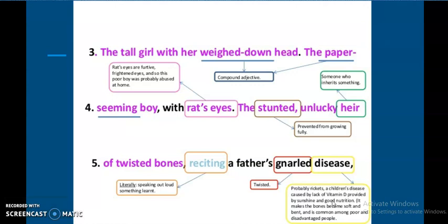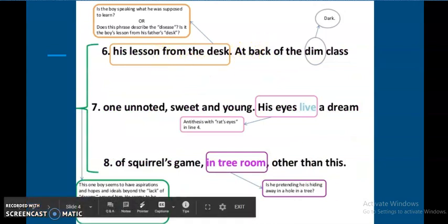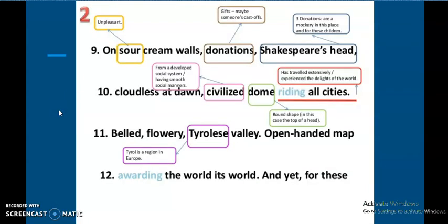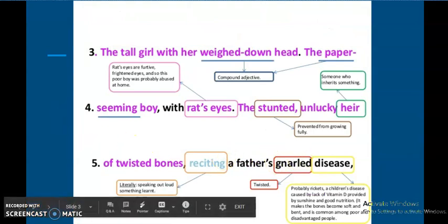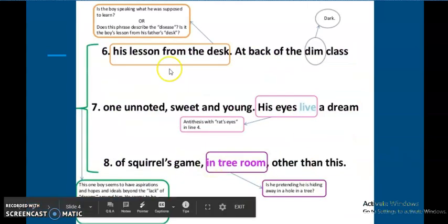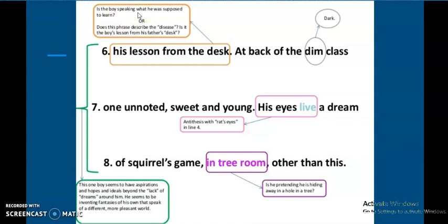'His lesson from the desk.' This is a continuation, number five. The line starts here: 'the stunted unlucky heir of twisted bones, reciting a father's gnarled disease, his lesson from the desk.' What lesson is he learning? The lesson is, is the boy speaking what he was supposed to learn in the school, or is the lesson that he's learning death, he's learning disease? There's a dichotomy in the phrase and this is the beauty of poetry. 'And at back of the dim class,' obviously you know the meaning of the word dim, 'at back of the dim class one unnoted sweet and young,' here is another boy who is being referred to who is sitting at the end of the class, but he's sweet, he's young.